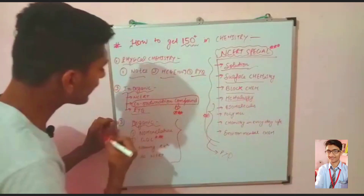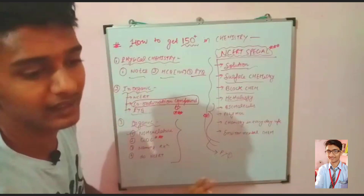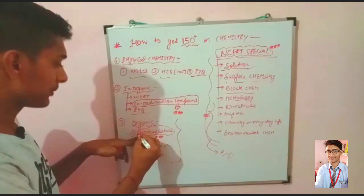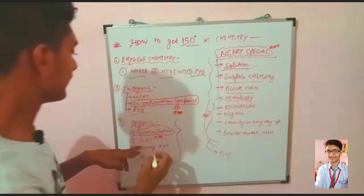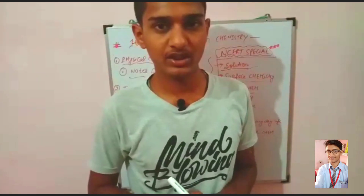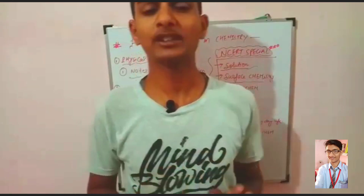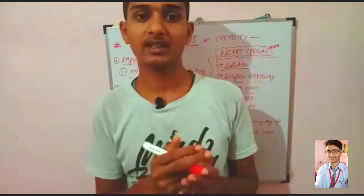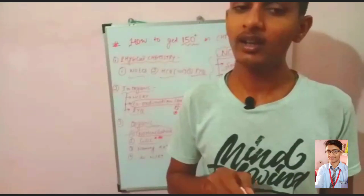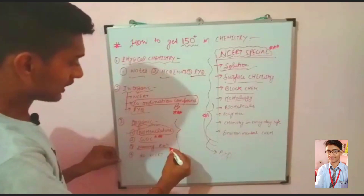Now for organic chemistry: Nomenclature — direct questions don't always come every year, but you still need to study these compounds, so don't skip it. Then General Organic Chemistry (GOC) — this covers basic strength, inductive effect, hyperconjugation, and resonance. You need to study these trends because GOC concepts are required to understand the next chapters on reaction mechanisms. Build a strong GOC concept base.